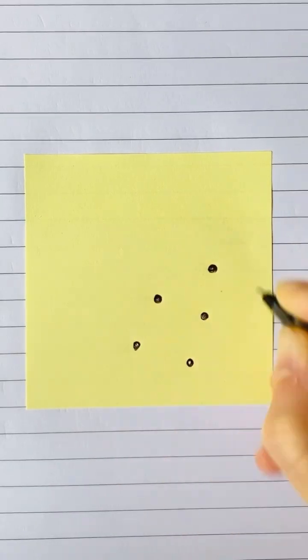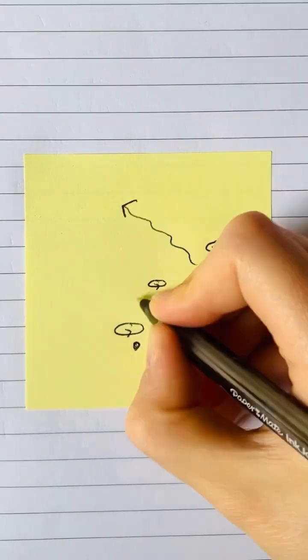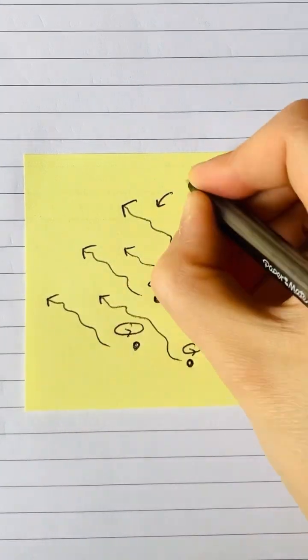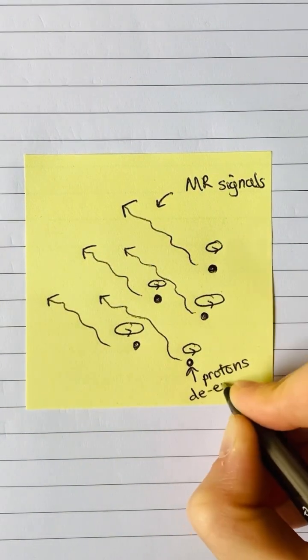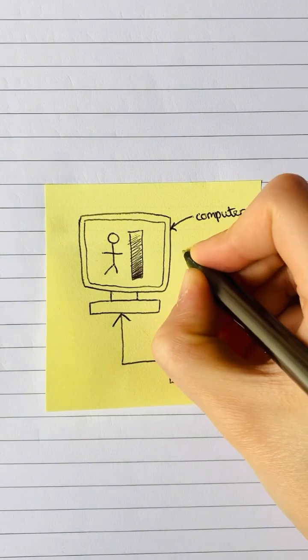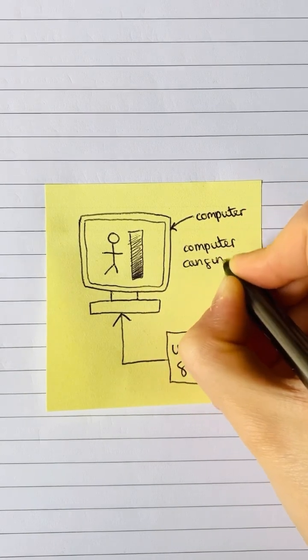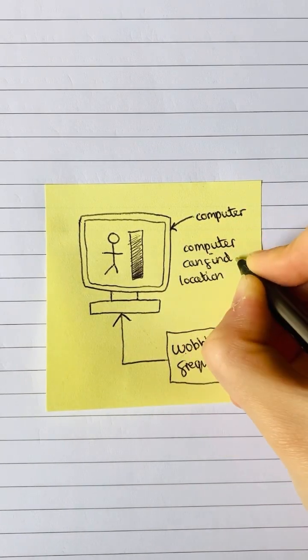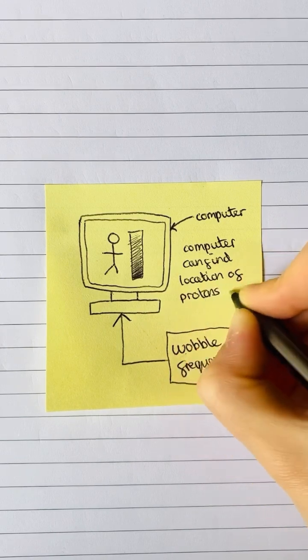Then, the protons relax when the radio frequency coils are turned off and release radio waves at their wobble frequency. These MR signals can be used to generate an image of the patient, since the machine uses the different frequencies to pinpoint where in the body the signal has come from.